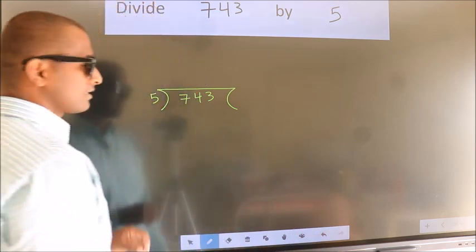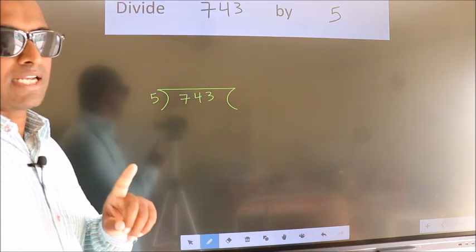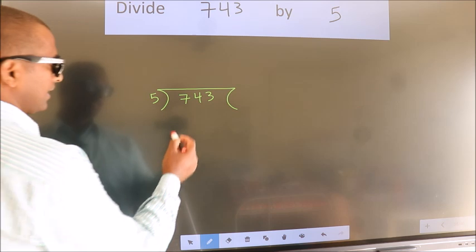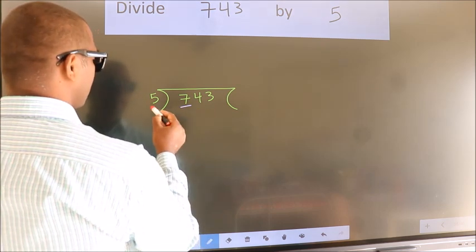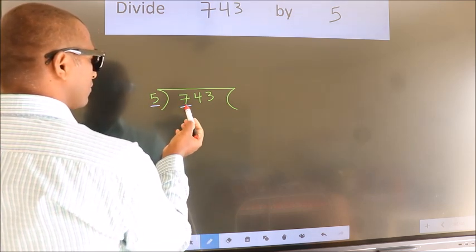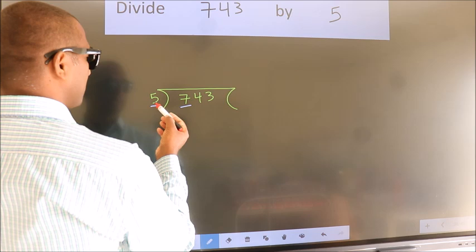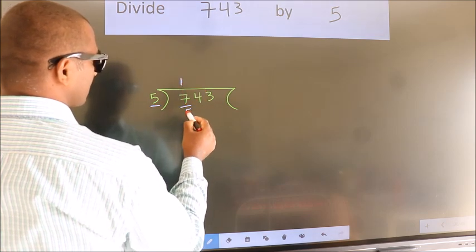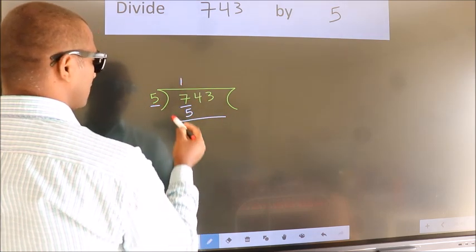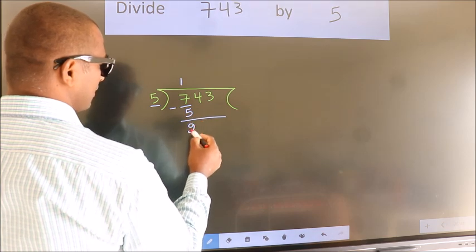This is your step 1. Next, here we have 7, here 5. A number close to 7 in 5 table is 5 once 5. Now, we should subtract. We get 2.